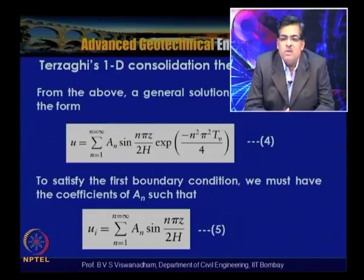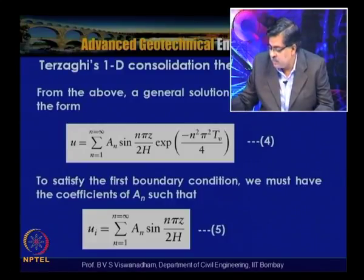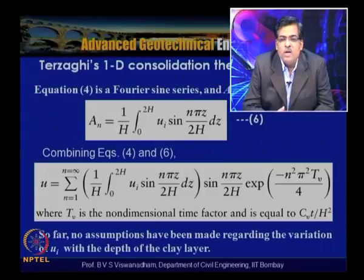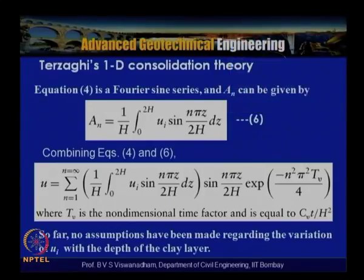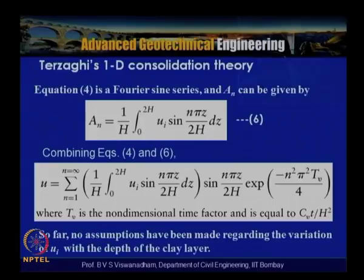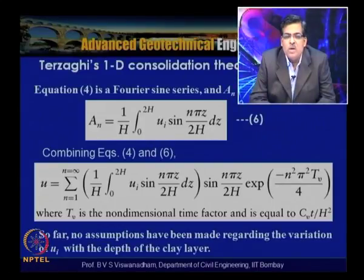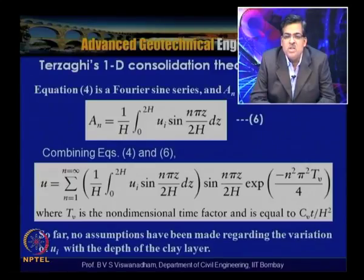To satisfy the first boundary condition, coefficient An must satisfy: ui = Σ(n=1 to ∞) An · sin(nπz/2h). This is a Fourier sine series, and An = (1/h) ∫₀²ʰ ui · sin(nπz/2h) dz. Combining these equations, the general expression for u becomes: u = Σ(n=1 to ∞) [(1/h) ∫₀²ʰ ui · sin(nπz/2h) dz] · sin(nπz/2h) · exp(−n²π²Tv/4).